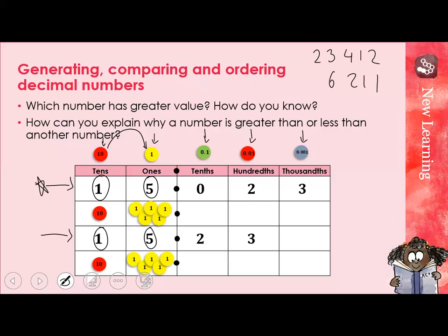So I have 15 and 15 in both rows so far, so I go to the next column. This time I have zero tenths in one number and two tenths in the other. Which is bigger? Zero tenths or two tenths? Well, two is bigger — two tenths has more than no tenths. Once I've identified a digit that is bigger, I can ignore the rest because no digit could make zero tenths greater than two tenths. So the bottom number, 15.23, is the greater number.